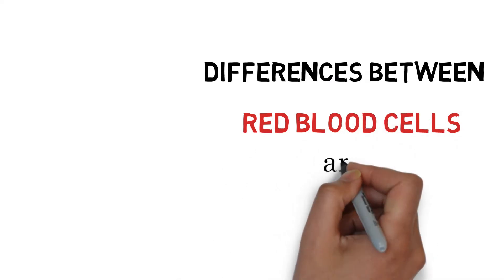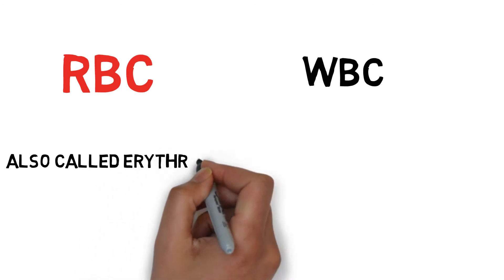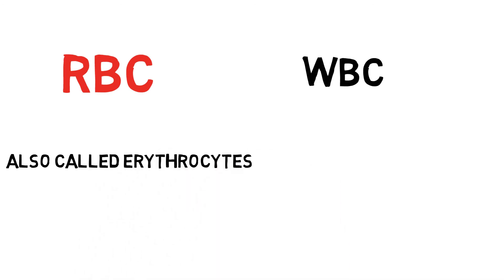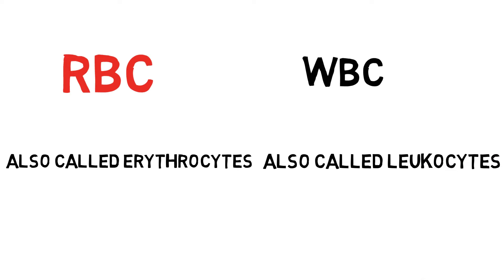Difference between red blood cells and white blood cells. Red blood cells are also known as erythrocytes, and white blood cells are also known as leukocytes. In erythrocytes, 'erythro' means red and 'cyte' means cell. In leukocytes, 'leuko' means white and 'cyte' means cell — so it's leukocyte, or white blood cell.